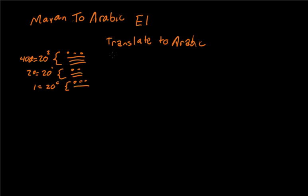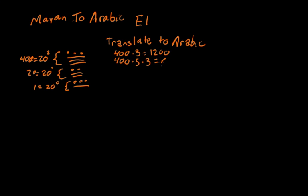So let's add this up. At the top here we have 400 times 3, so we'll say 400 times 3 — that gives us 1,200. But we also have 5 times 400 for each line, and we have to multiply that by 3 because each one of these lines is worth 5 times 400. So 5 times 400 gives us 2,000, and 2,000 times 3 equals 6,000.